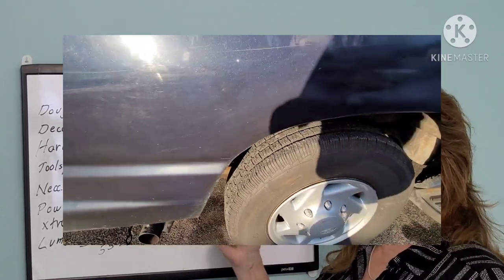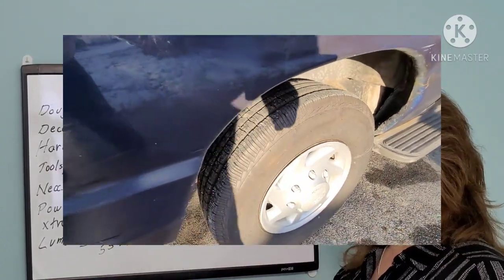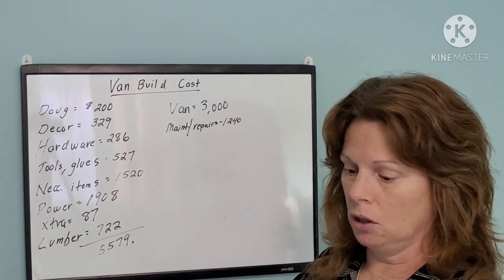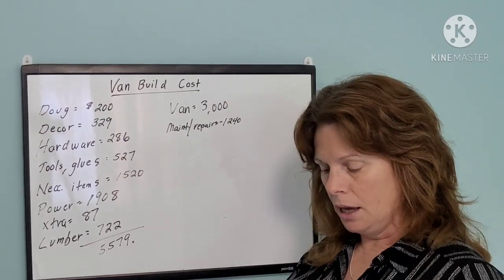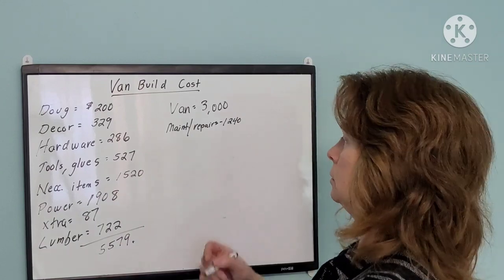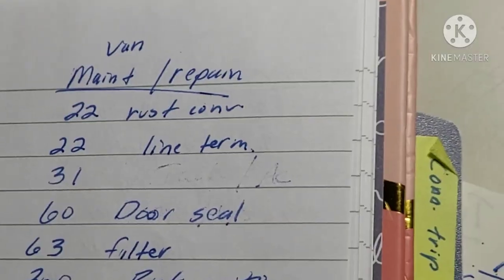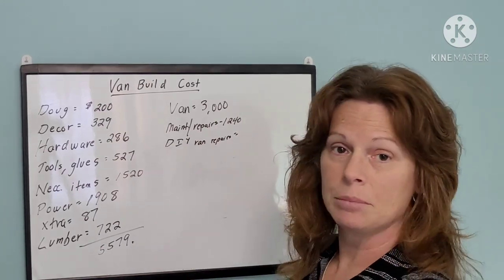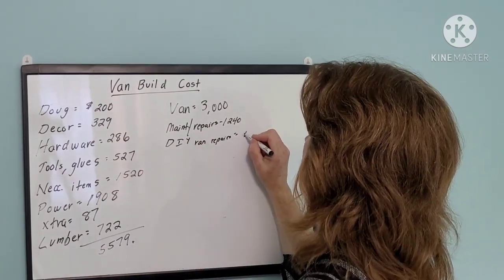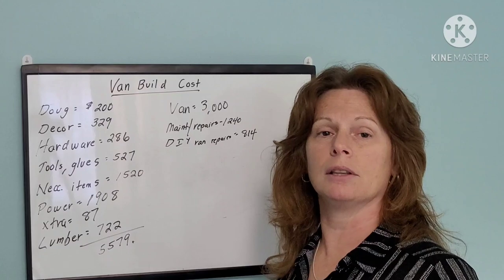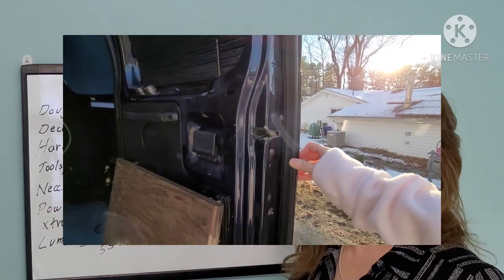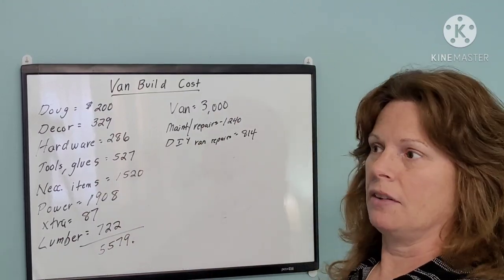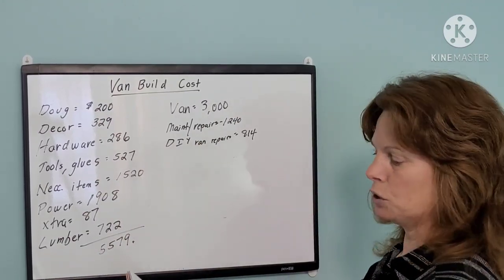So in addition to the repairs that I had to pay for, which wasn't too bad actually, we had our own repairs that we did, a lot of rust repair especially. So I'll call that our DIY van repairs. That came to $814. Like for instance, the door seal in the back that was leaking, so I had to buy a new one, that was like 60 bucks or something like that. So that's all the items that we needed to fix the van ourselves.